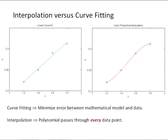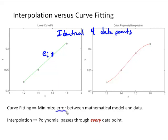Let's look at a comparison between interpolation and curve fitting. Here we're looking at two data sets — it's the identical data, the same four data points. We could fit a linear equation through those four data points by minimizing the sum of the squares of the residuals — minimizing the error between the mathematical model and the data. In the figure to the right, we're going to interpolate between those four data points, using a function, usually a polynomial, that passes through every data point.